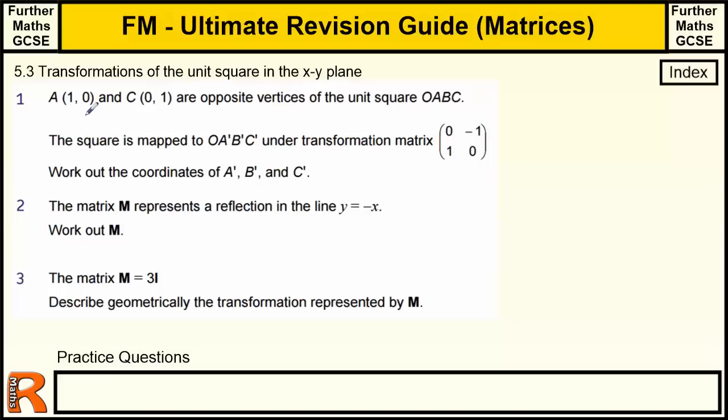Okay, question 1. A is 1, 0, C is 0, 1, are opposite vertices of the unit square, so that's just setting the question up. The square is mapped onto this under the transformation matrix. Work out the coordinates of A dash, B dash, and C dash. So A is equal to 1, 0, B is 0, 1, C is 1, 1, and O is obviously equal to the origin.